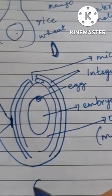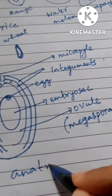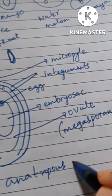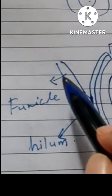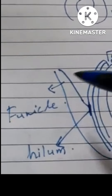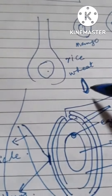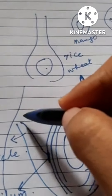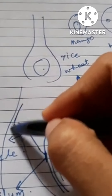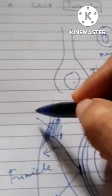This is the structure of a typical anatropous ovule. The ovule is attached with the tissues of the ovary. The tissue of the ovary on which the ovule is attached is called the placenta.